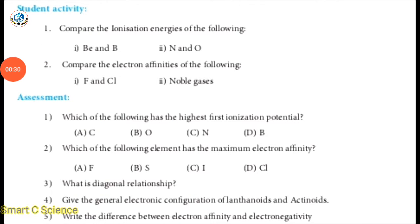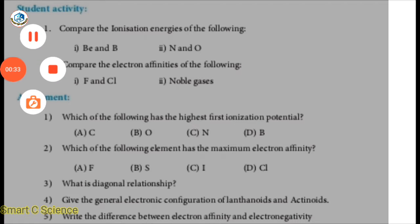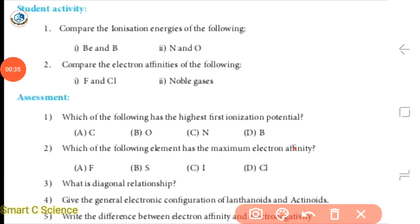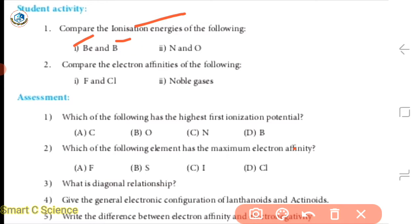The first question is about ionization energy. The elements given are B (boron), Be (beryllium), nitrogen, and oxygen. Let's answer.